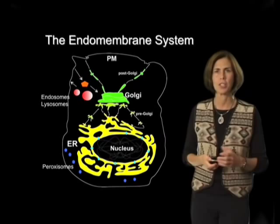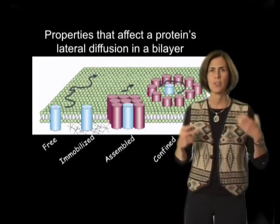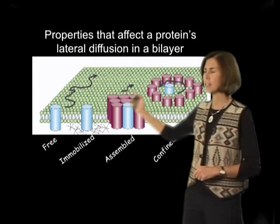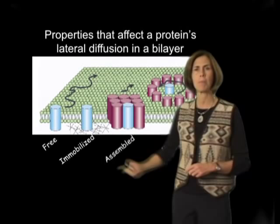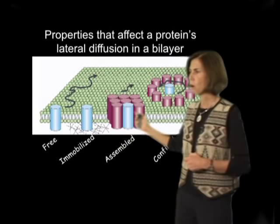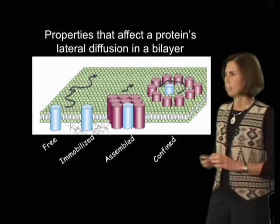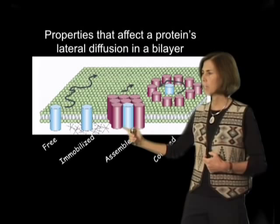Let me give you an example. One of the key properties of proteins important for how they function within bilayers is how they're integrated in the bilayer. Are these molecules free to diffuse randomly through Brownian motion? Or are they immobilized through binding to cytoskeletal components? Or are they assembled into large molecular arrays, or confined through other molecular players?